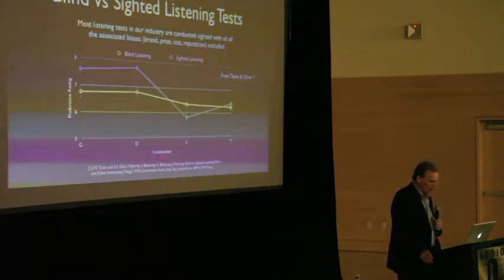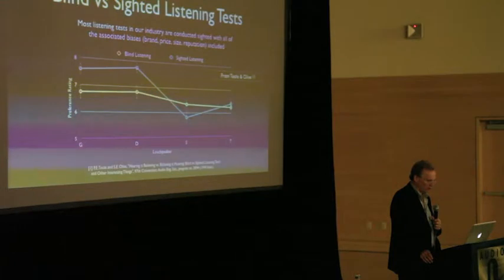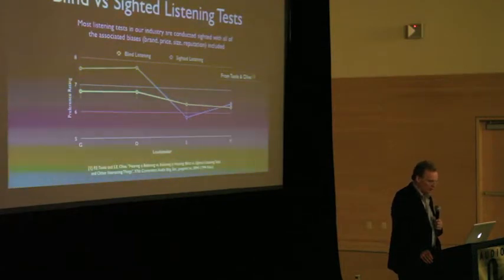And loudspeakers G and D were the most expensive loudspeakers. They were $5,000, and in the sighted test, the scores went up. Speakers S, which was an inexpensive home theater in a box, the scores went down.